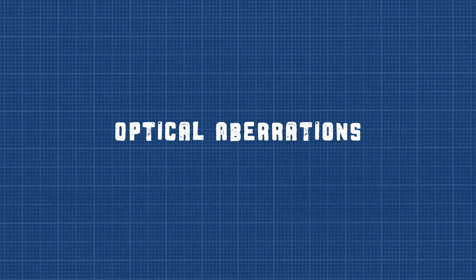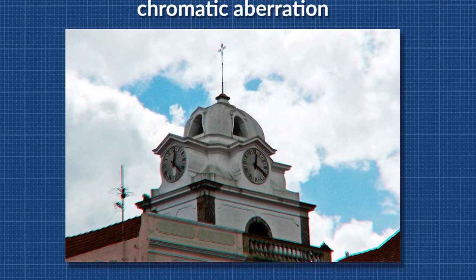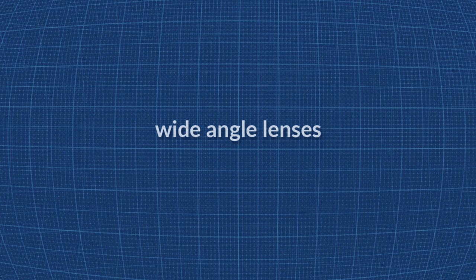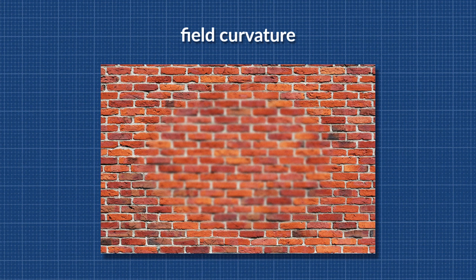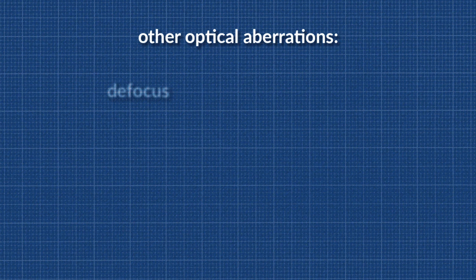Chromatic aberration occurs when different wavelengths are not focused to the same point, usually towards the edges of the frame. Barrel distortion and pincushion distortion—the former can often occur in wide-angle lenses and the latter in telephoto lenses. Field curvature: a flat object, such as a wall, cannot be brought completely into focus since the focal plane is curved. Other optical aberrations are defocus, astigmatism, spherical aberration, and coma.